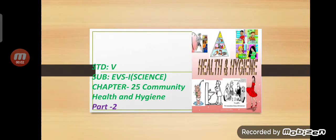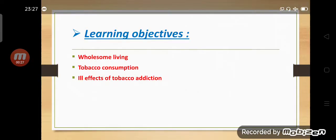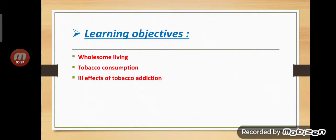Good morning dear children. Let us continue with Chapter 25, that is Community Health and Hygiene, Subject Science Standard 6. This is our Part 2. In the last part we learned about community health and the importance of community health. In this part we will see about wholesome living, tobacco consumption, and ill effects of tobacco addiction. Let us begin.